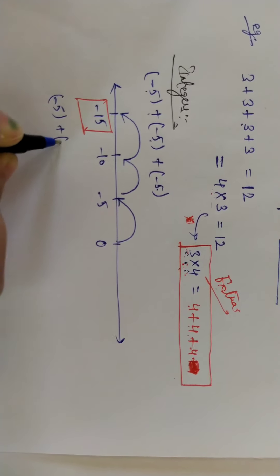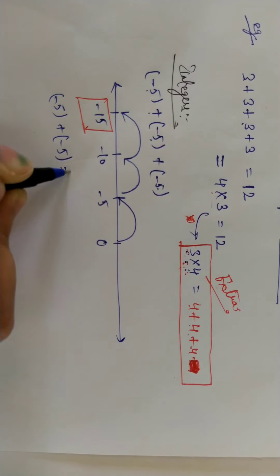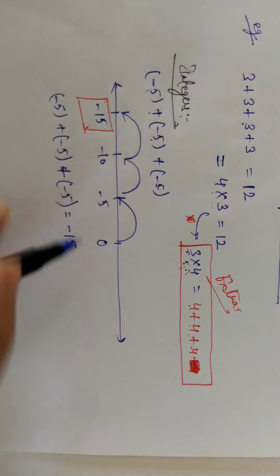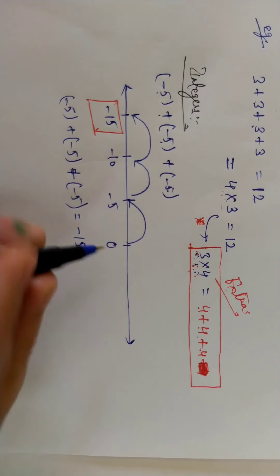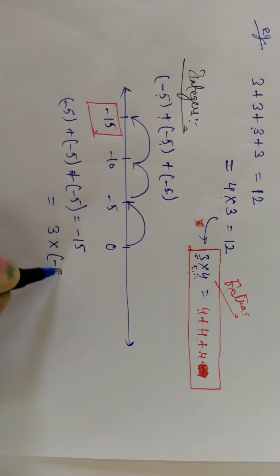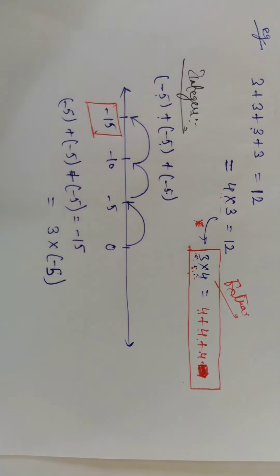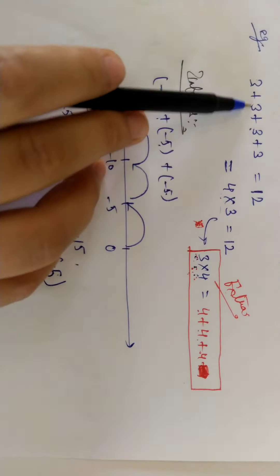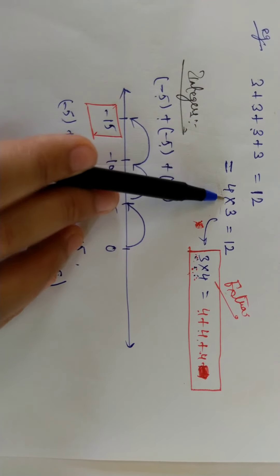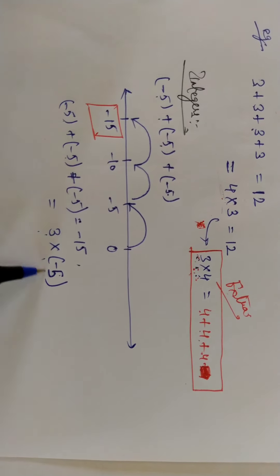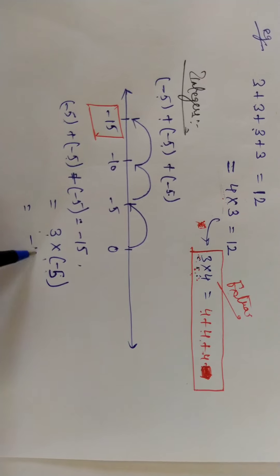You come up to minus 15. It means: minus 5 plus minus 5 plus minus 5 equals minus 15. This is 3 times minus 5. Just like with natural numbers you had 4 times 3, here you have 3 times minus 5, and 3 times minus 5 equals minus 15.